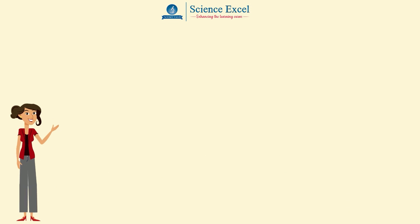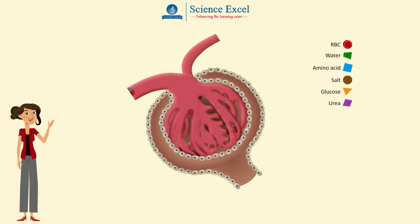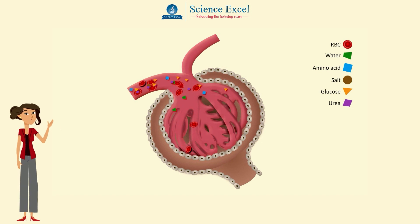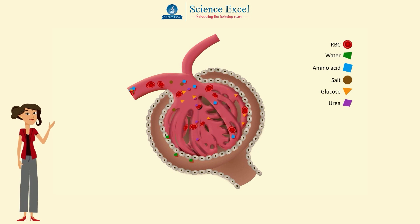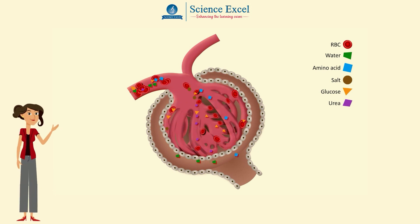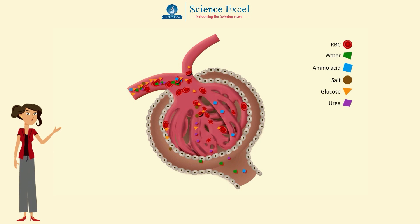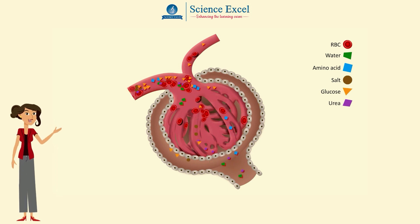We learnt in our previous tutorial the process of ultrafiltration, in which the glomerulus filters water and small solutes out of the bloodstream. The resulting filtrate contains not only waste but also other substances the body needs, like essential mineral ions, glucose, amino acids, vitamins and smaller proteins.